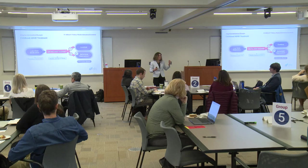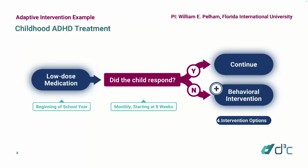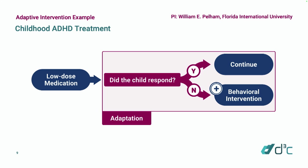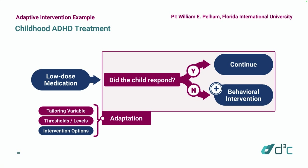The fourth element is intervention options — different types of treatments, intensities, or dosages. In adaptive interventions, these usually correspond to different tactics. Here there are two tactics: continue or augment with a behavioral intervention. The adaptation process is the process of using dynamic information about the person to decide whether and how to intervene. It includes the tailoring variables, the thresholds, and the intervention options.